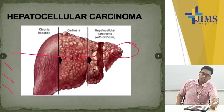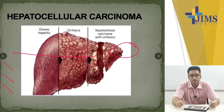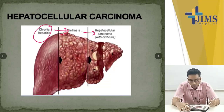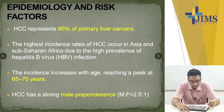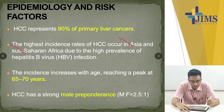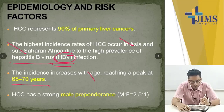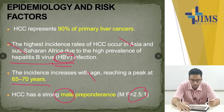Hepatocellular carcinoma usually occurs as a long-term complication of cirrhosis. Chronic hepatitis changes into cirrhosis which changes into hepatocellular carcinoma. HCC occurs mainly in Asia and sub-Saharan Africa due to HBV — hepatitis B virus infection. Incidence increases with age, with a strong male preponderance of 2.5 to 1.